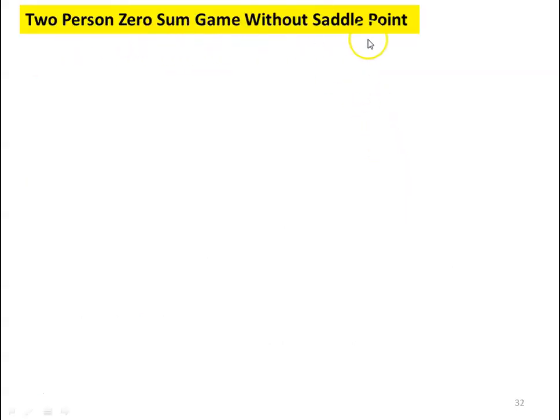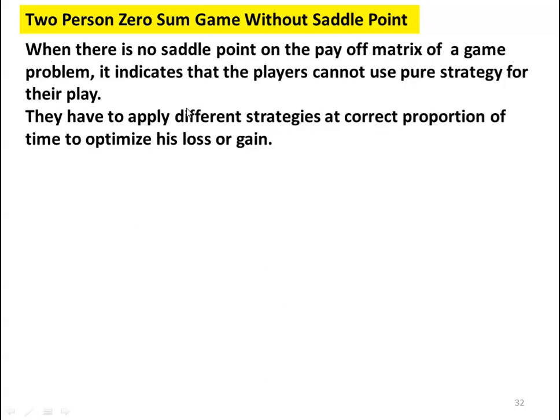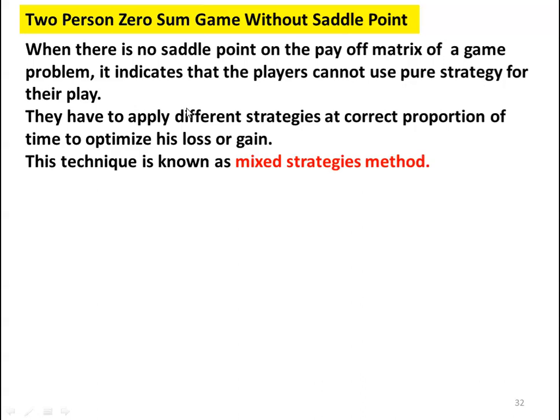In the 2-player zero-sum game without saddle point, when there is no saddle point on the payoff matrix, it indicates that the player cannot use pure strategy. When there is a saddle point, the strategies corresponding to it are the pure strategies for players A and B. When there is no saddle point, the player must apply different strategies at the correct proportion of time to optimize their loss or gain — this is called the mixed strategies method.